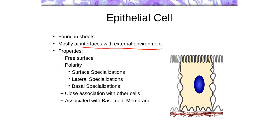Some of the characteristics these cells have include a free surface. Up here would be the free surface — there would be something like the lumen of a tube. If you're looking at a duct of some kind, the inside of that tube is called the lumen. In this drawing, this would be a typical cell found within the digestive tract, the small intestine. This cell has a free surface — up here there's nothing above it except maybe fluids passing across the surface or air. There's no other cells above it — that's the idea of a free surface.